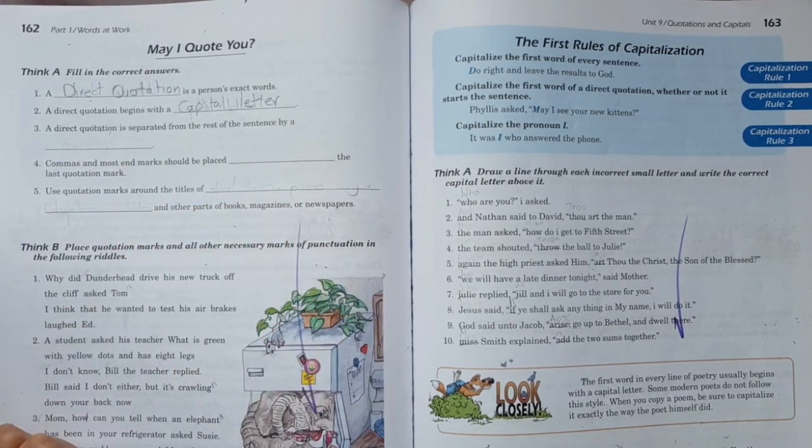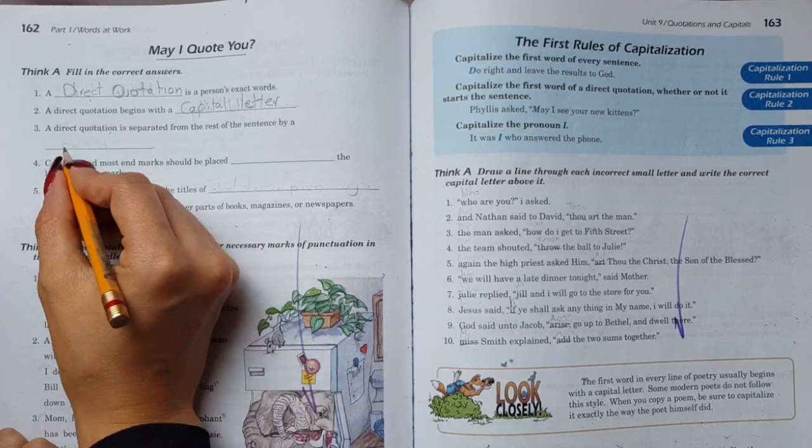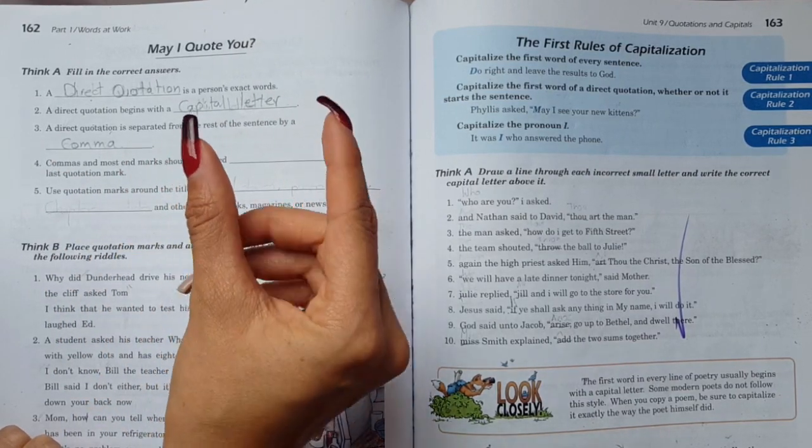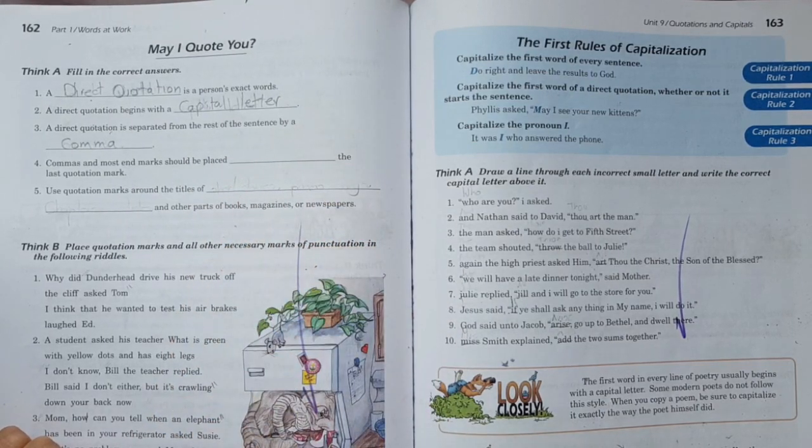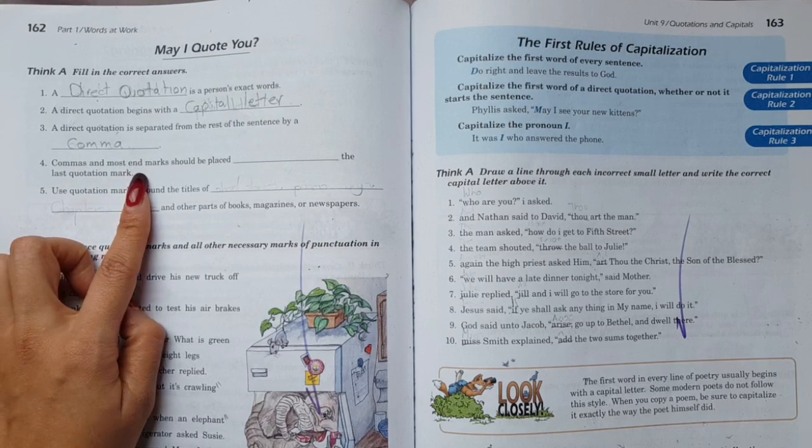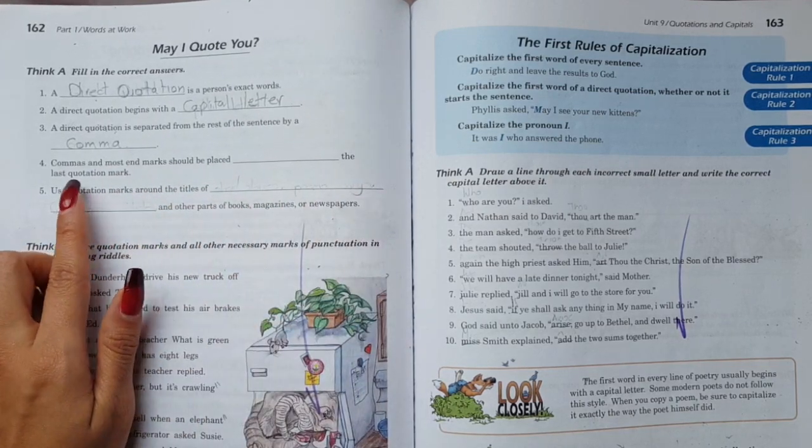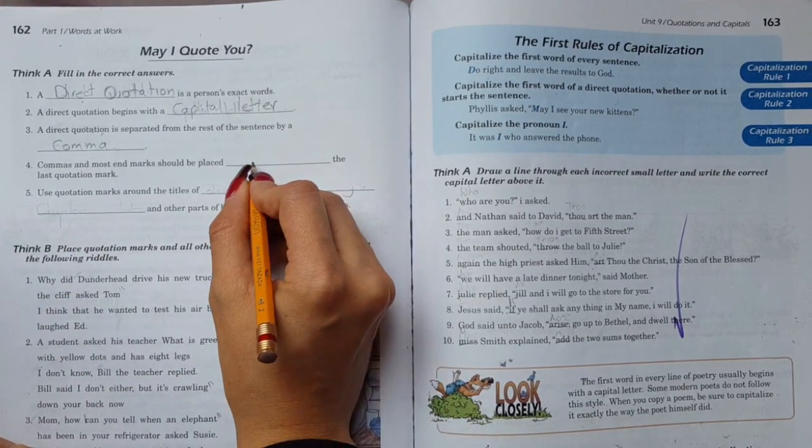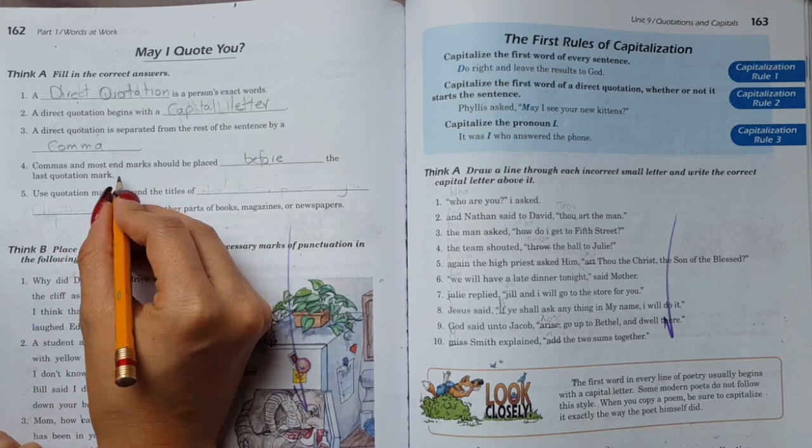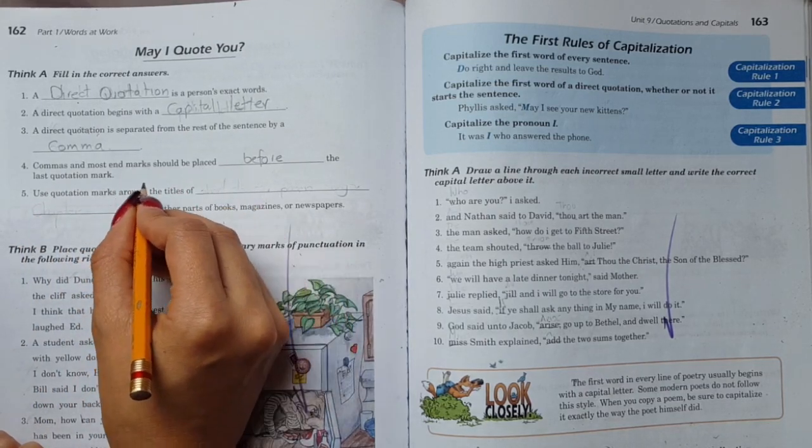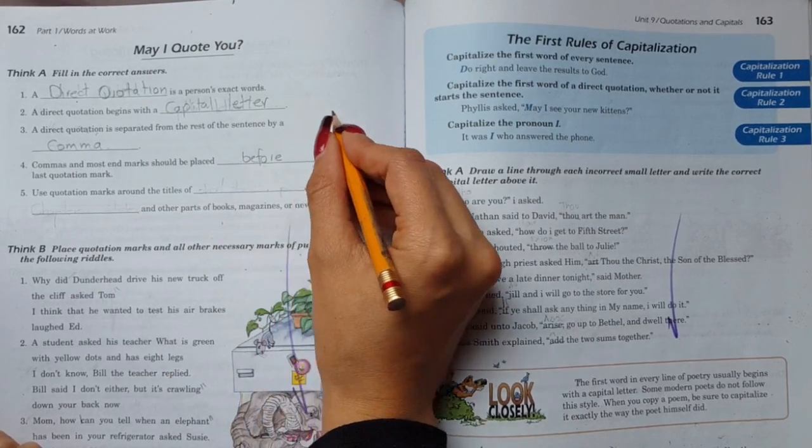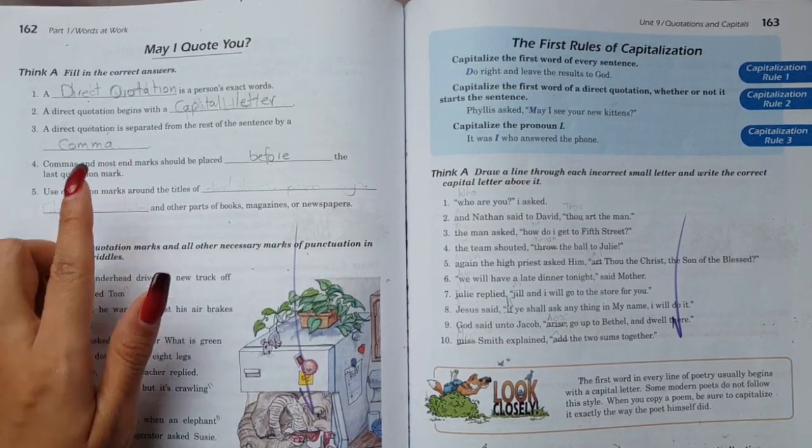Easy job. Next, a direct quotation is separated from the rest of the sentence by a - a direct quotation is separated from the rest of the sentence by a comma. Remember, we use it to separate and emphasize that the following set of words is a direct quotation, the exact words of someone.